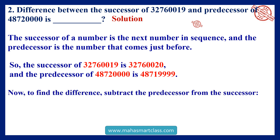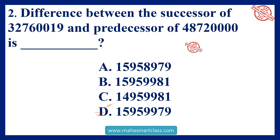Now, to find the difference, subtract the predecessor from the successor: 4 crore 87,19,999 minus 3 crore 27,60,020 equals 1 crore 59,59,979. Answer is option D: 1 crore 59,59,979.